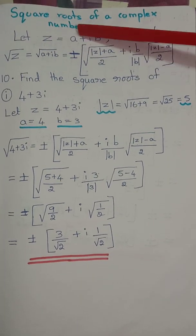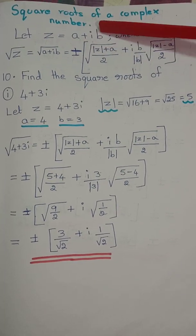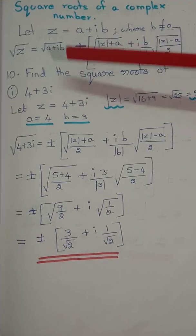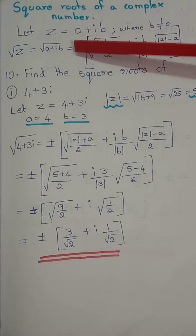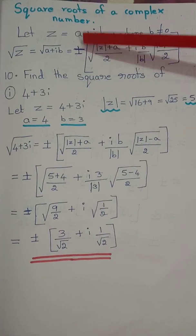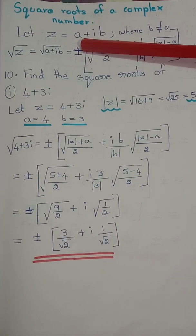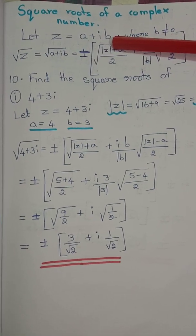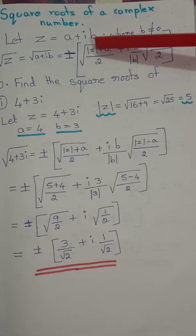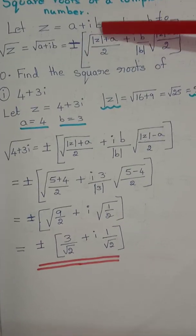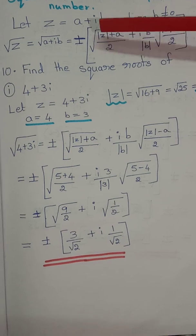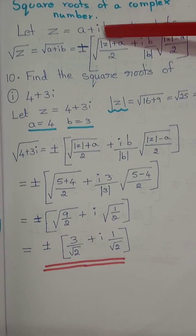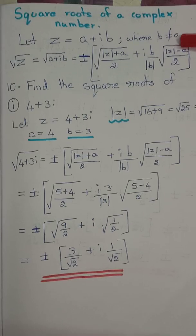We are going to see how to find out the square root of a complex number. Let z equal to a plus ib, where a is the real part and b is the imaginary part. The formula I am going to present is suitable only when the imaginary portion is not equal to 0.